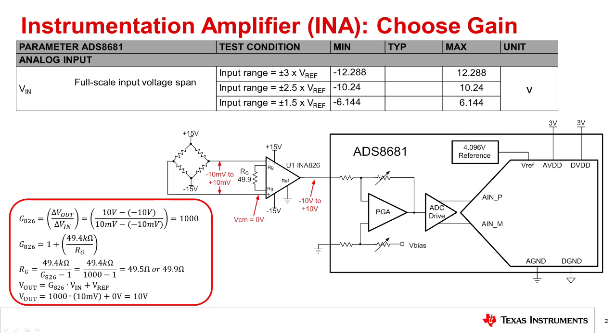Also, INAs often have low bandwidth, as they are intended to amplify slow-moving sensor outputs. Because the bandwidth is typically low, INAs are often not capable of directly driving a switched capacitor input SAR ADC. However, they can drive the PGA input of high voltage type SAR converters directly.